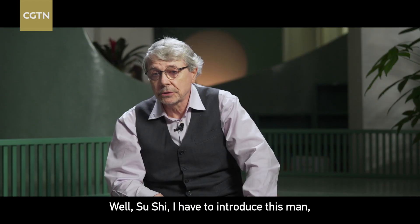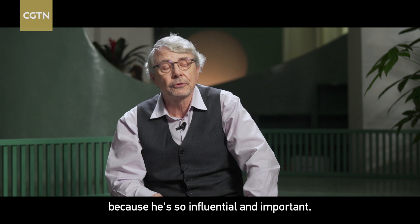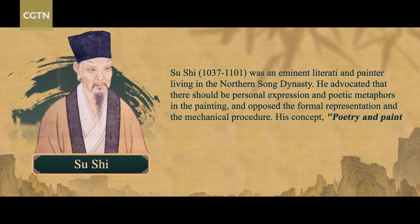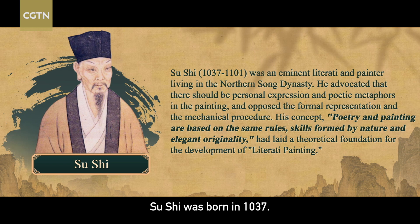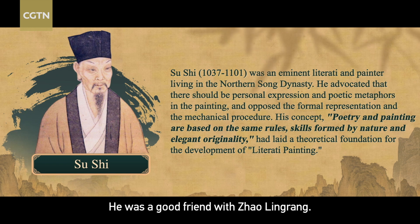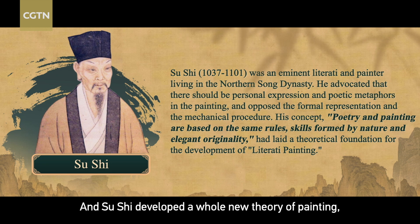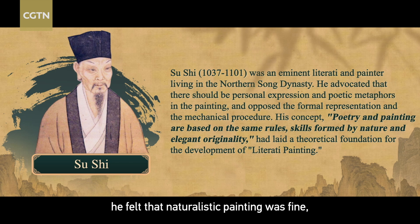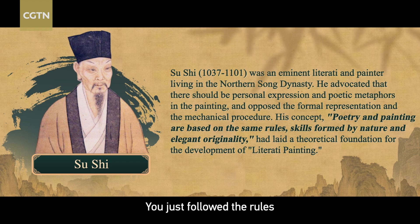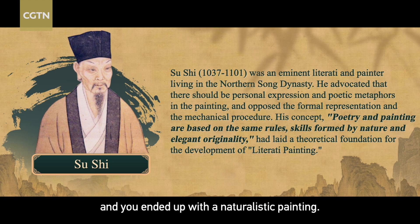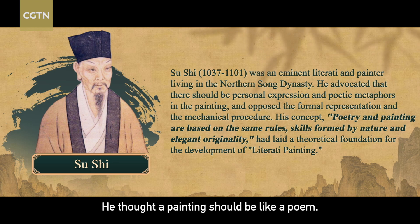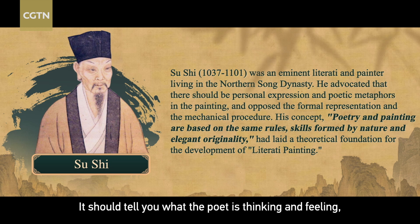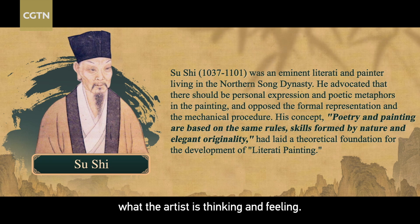Su Shi — I have to introduce this man because he's so influential and important. Su Shi was born in 1037. He was good friends with Zhao Lingran. Su Shi developed a whole new theory of painting. In his theory of painting, he felt that naturalistic painting was fine, but it was too mechanical — you just follow the rules and you end up with a naturalistic painting. He thought a painting should be like a poem. It should tell you what the poet is thinking and feeling, what the artist is thinking and feeling.